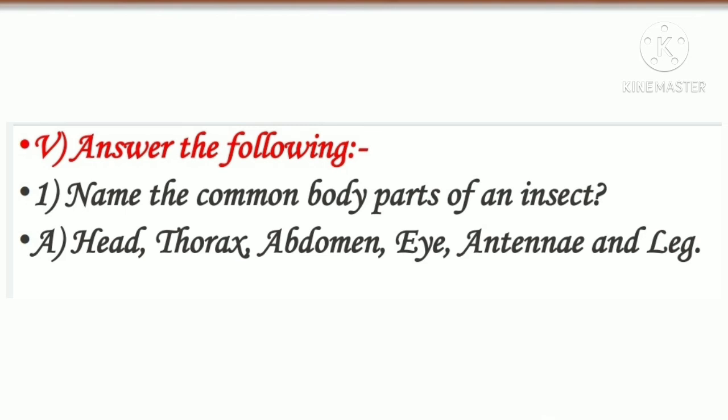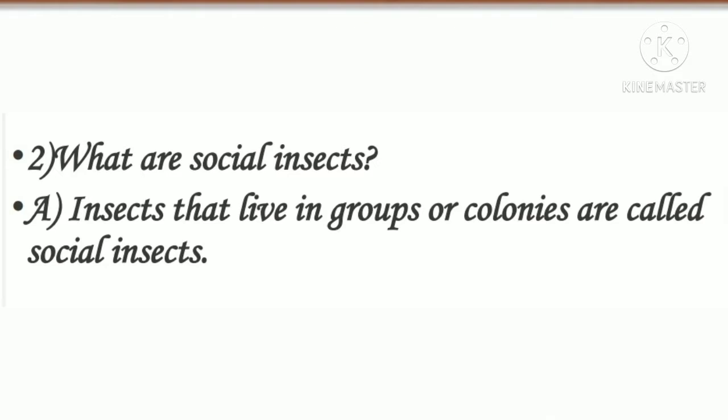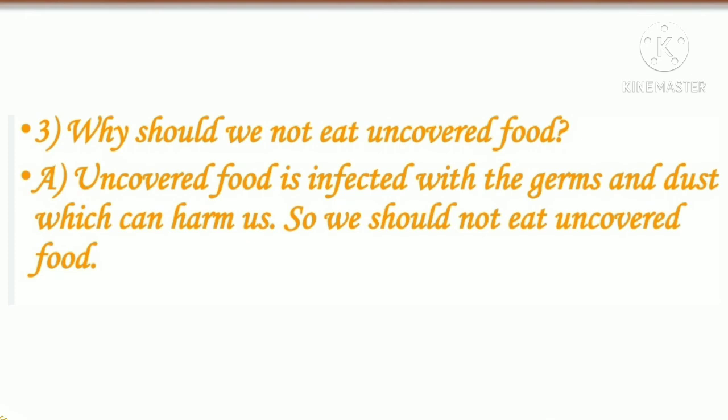Fifth question: answer the following. First one: name the common body parts of an insect. Answer: head, thorax, abdomen, eye, antenna and leg. Second question: which are social insects? Answer: insects that live in groups or colonies are called social insects. Third question: why should we not eat uncovered food? Answer: uncovered food is infected with germs and dust which can harm us, so we should not eat uncovered food.